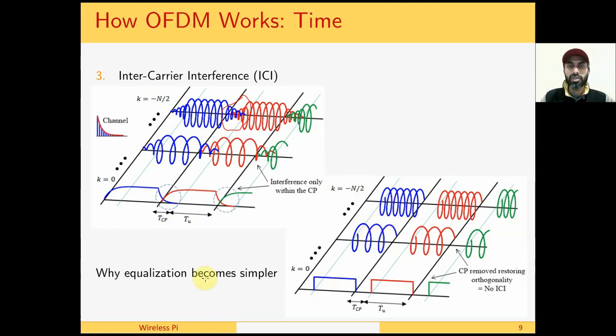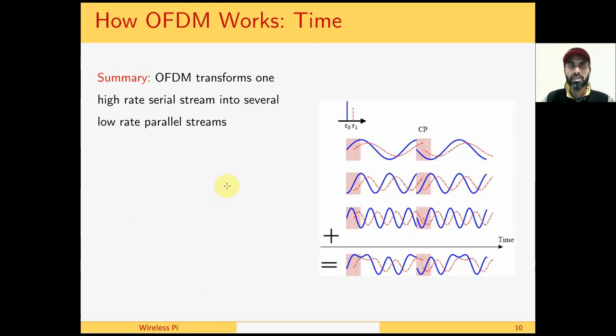The question is why equalization becomes simpler in this case? While we will see this in detail in the frequency domain, here we can see that each subcarrier interferes with the subcarrier of the same frequency. And when multiple waves of the same frequency are added to each other, the result is that we have a set of parallel channels.